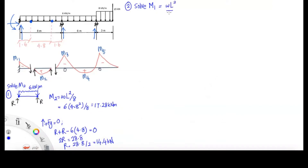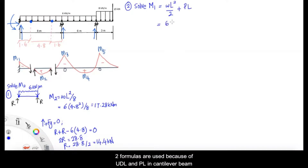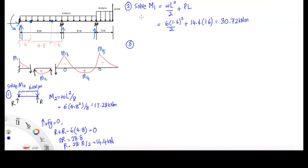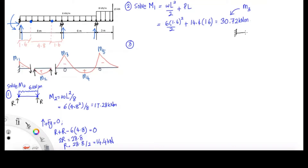Now we solve M1. We're going to use WL²/2 plus PL, where WL²/2 is the cantilever formula and PL accounts for the reaction force at the pin — P is 14.4 kN and L is the distance between the pin and the support. Notice that M1 is equal to M3, because both have the same distance of 1.6 m between pin and support, and the same loading of 6 kN/m. Using the same formula WL²/2 plus PL gives the same answer, saving time.